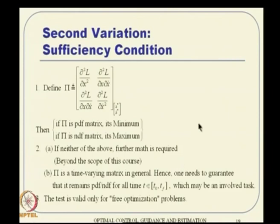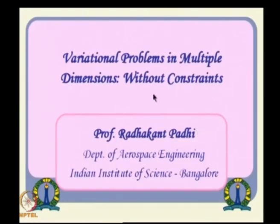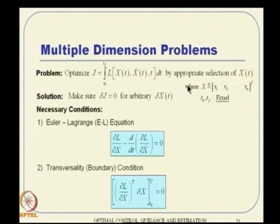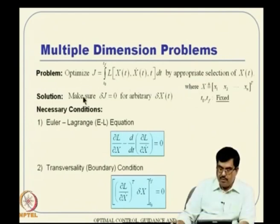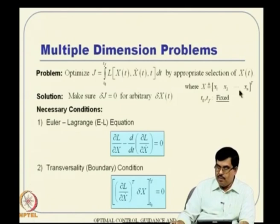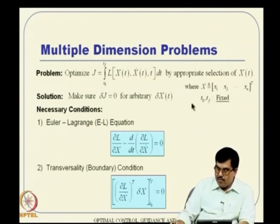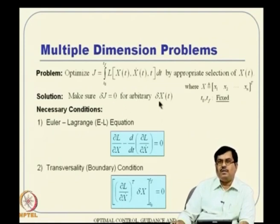Now, how about extending these concepts to vector problems? That is where our main interest lies, because all our state variables are typically of n-dimension and control is m-dimension. Consider the same problem but in multiple dimensions. To begin with, we consider the problem without any constraint. The only difference is that small x is replaced by capital X, which contains n components: x1, x2, up to xn. The objective is still to make delta J go to zero for arbitrary delta X, with T0 and Tf both fixed.